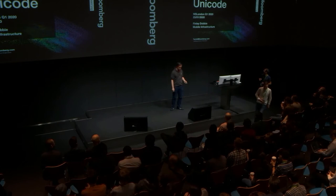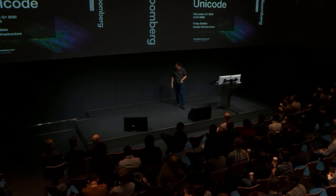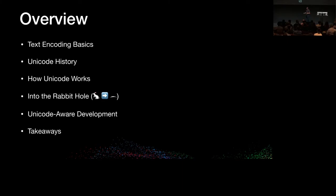Our applications use text, but a lot of us use Unicode. I certainly didn't understand what was going on properly until relatively recently in my career, so I thought it might be interesting to cover a few things. We have a little bit of content to cover today: text encoding basics, the history of Unicode and how it developed, how it actually works under the hood, some interesting corners of Unicode, and what this means for Unicode-aware development within our apps.